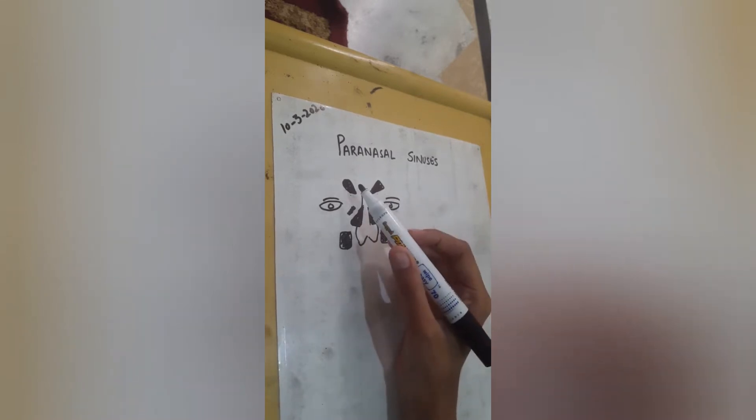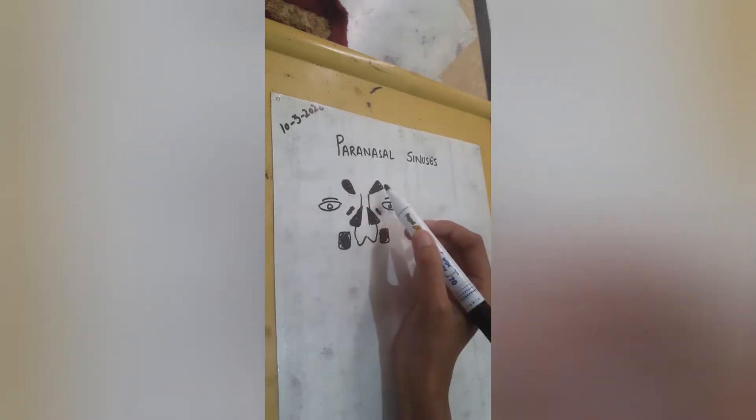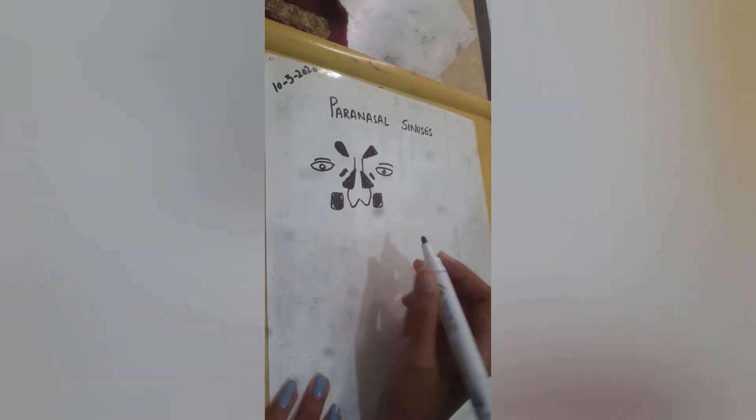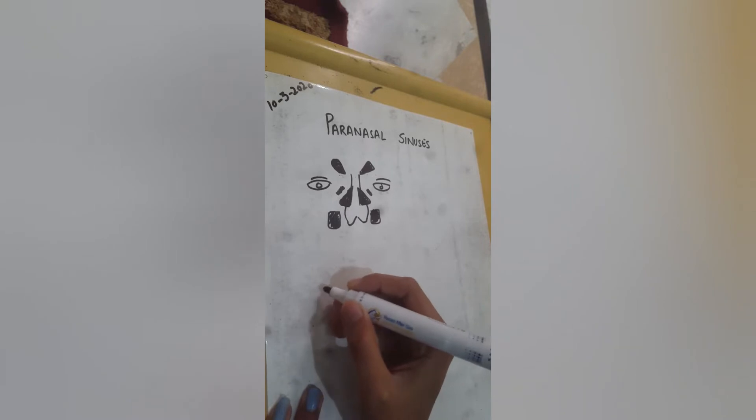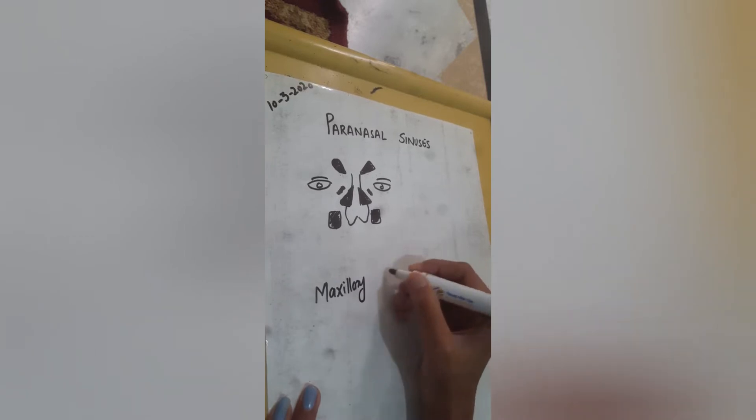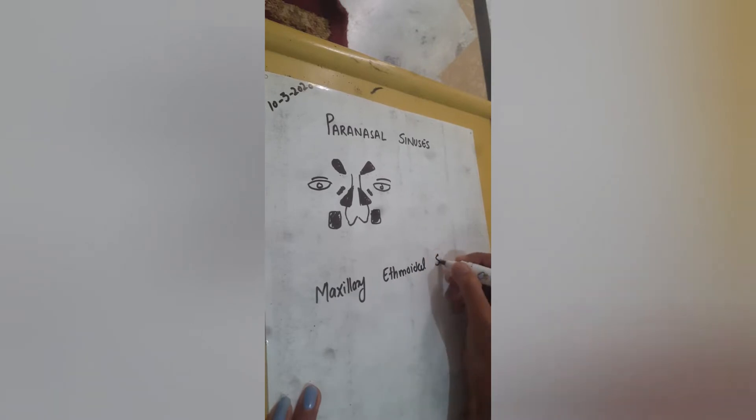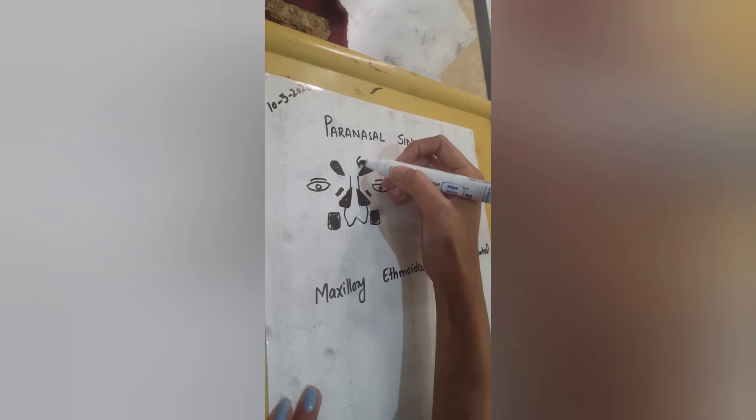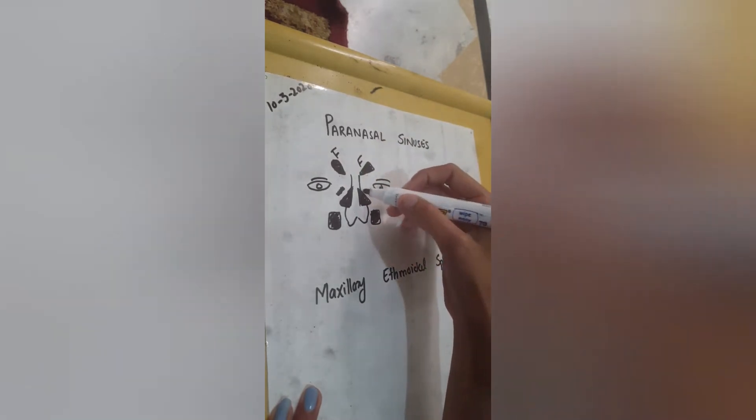I have drawn what looks like a nose, and the areas that are colored are sinuses. Now we have, as we all know, four paranasal sinuses. One is maxillary, then we have ethmoidal, then we have sphenoidal, and then we have frontal. These are the paranasal sinuses.